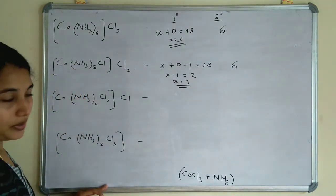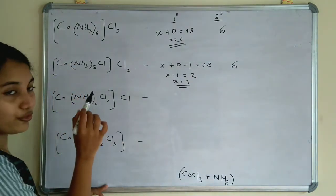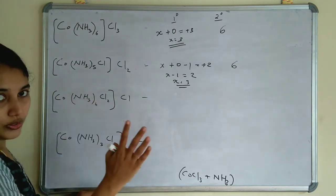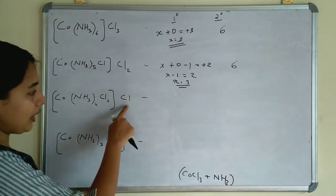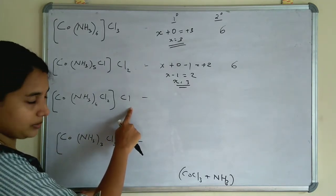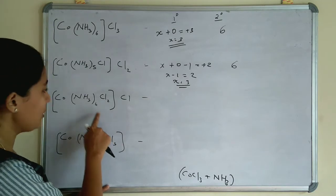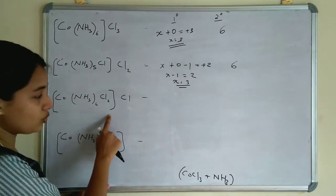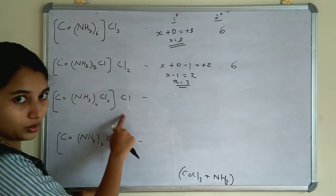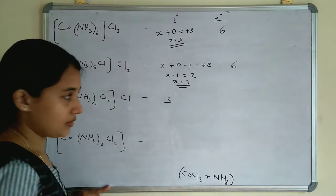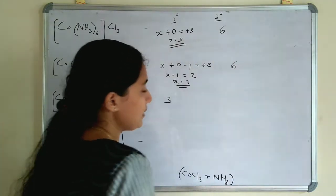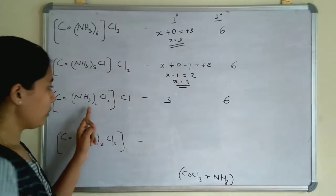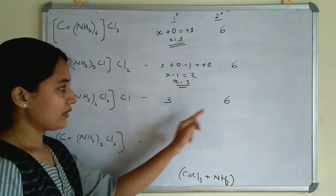In the third example, Co(NH₃)₄Cl₂·Cl: in the coordination sphere there are 4 ammonia and 2 chlorine, and in the ionic sphere 1 chlorine. The oxidation number of cobalt: X + 0 − 2 = +1, so X − 2 = 1, X = 3. Primary valency is 3. Secondary valency is the coordination number: 4 ammonia + 2 chlorine = 6.